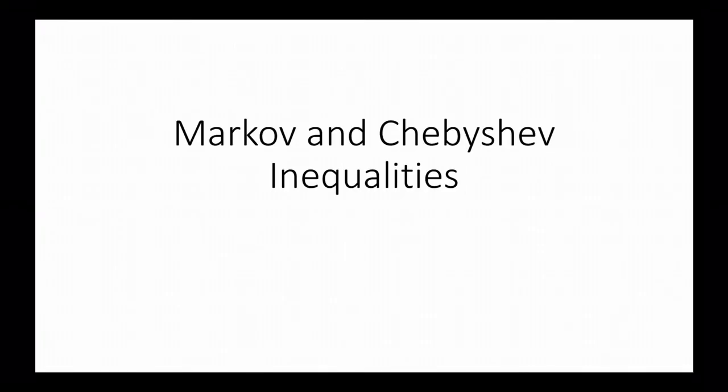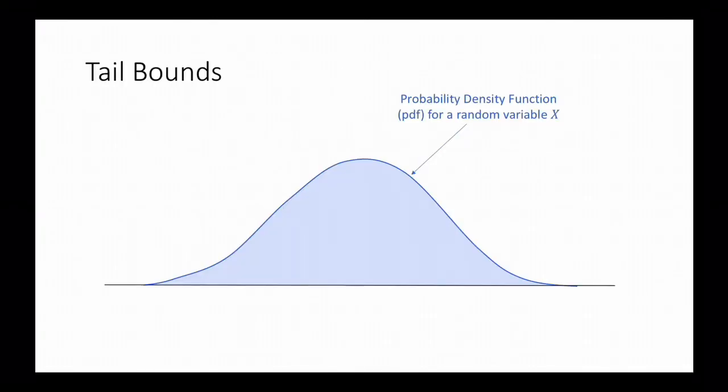In this video we'll talk about Markov's inequality and Chebyshev's inequality, which are two very useful and general inequalities in probability theory. Markov's inequality and Chebyshev's inequality are examples of tail bounds. Tail bounds bound the probability of large deviations.